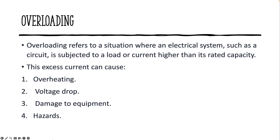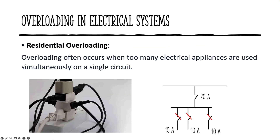Some common scenarios of overloading in electrical systems include residential overloading. In homes, overloading often occurs when too many high-power electrical appliances are used simultaneously on a single circuit. For example, running multiple air conditioners, heaters, and high-wattage devices at the same time.